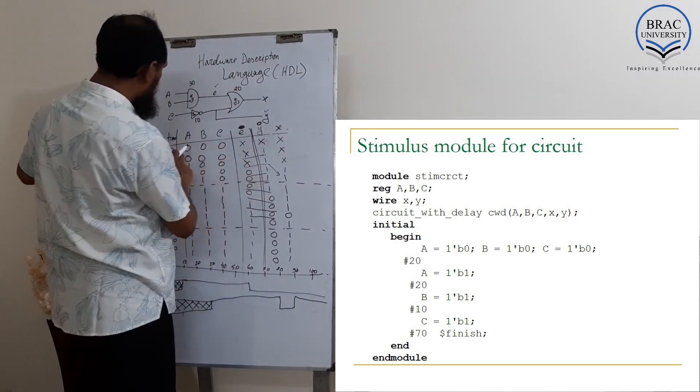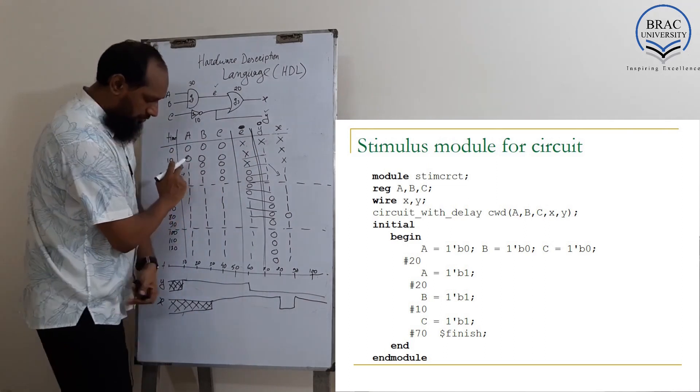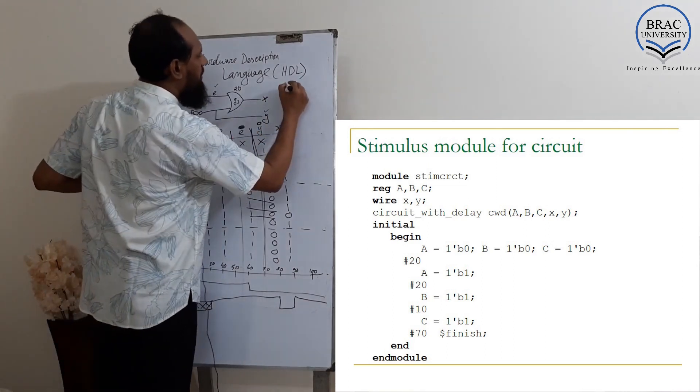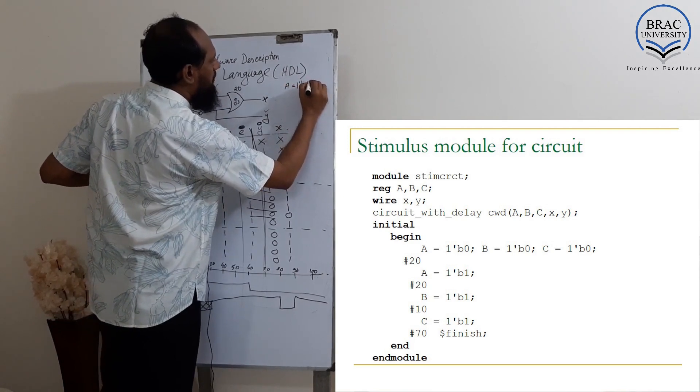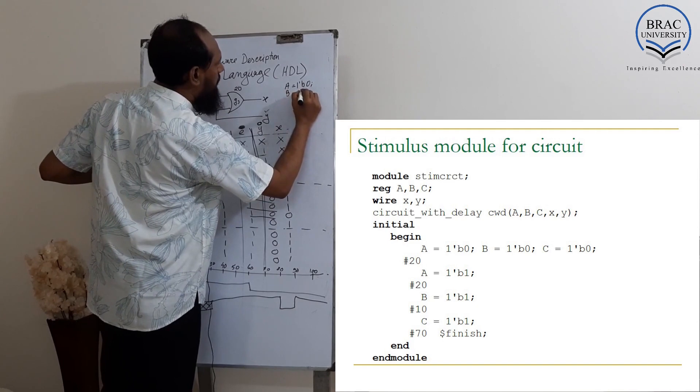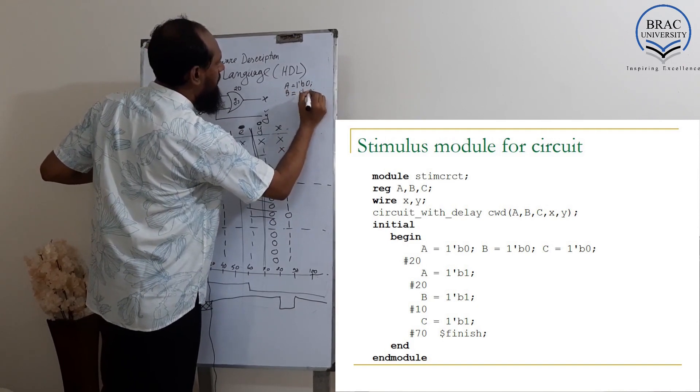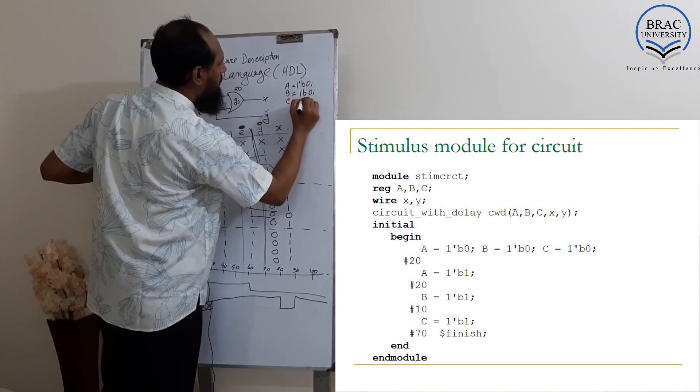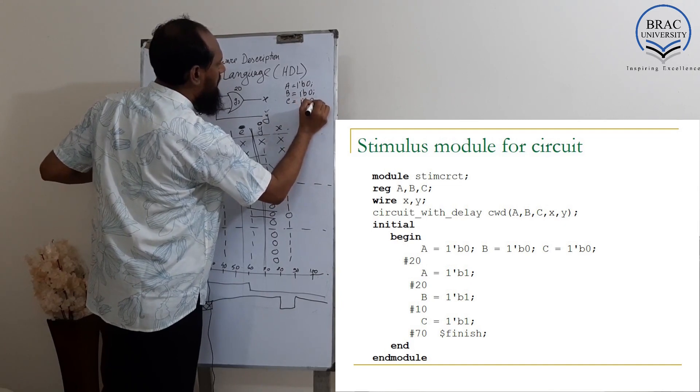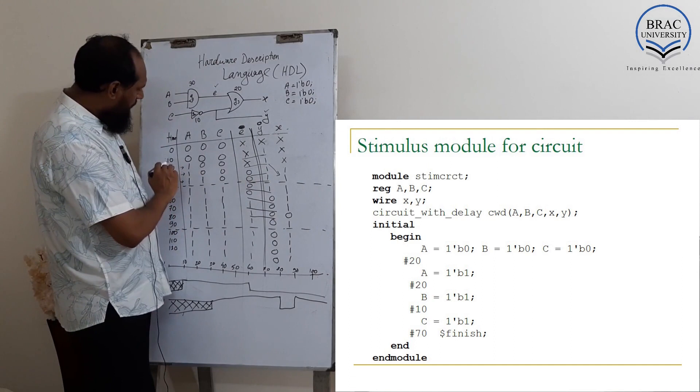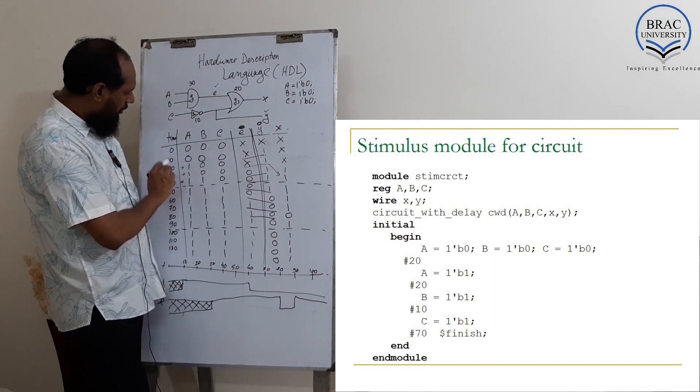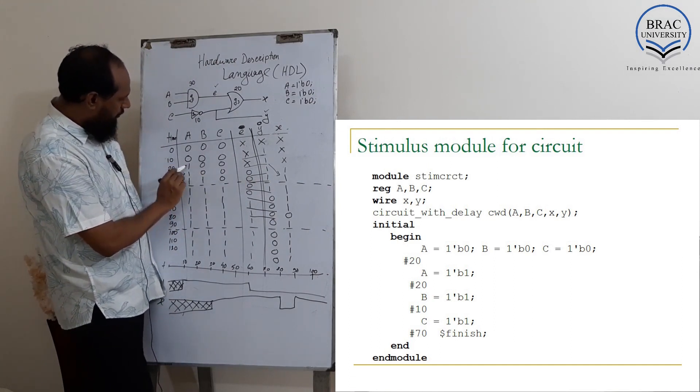Here our initial value was 0, 0, 0. That means A equal to 1 bit 0, B equal to 1 bit 0, C equal to 1 bit 0. Then after how many time? On what time we changed it? On 20.